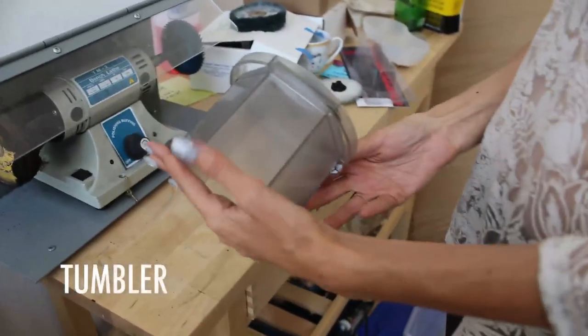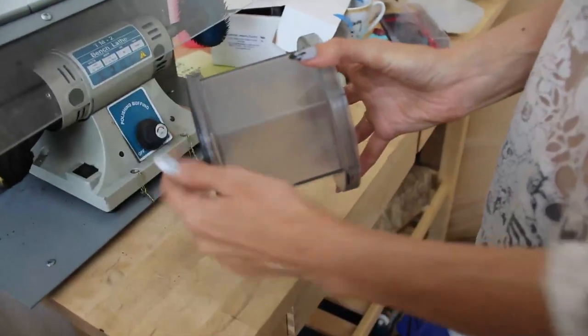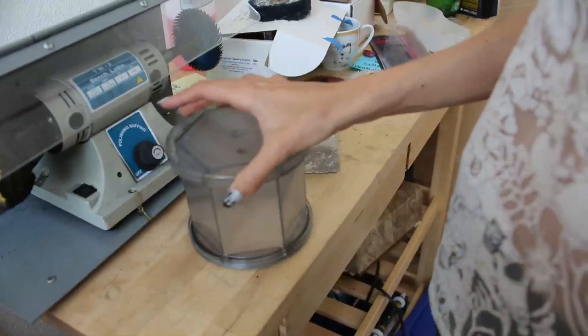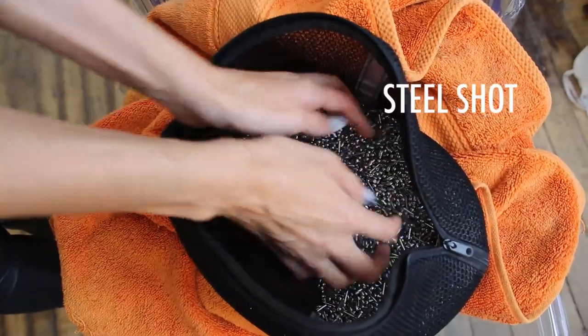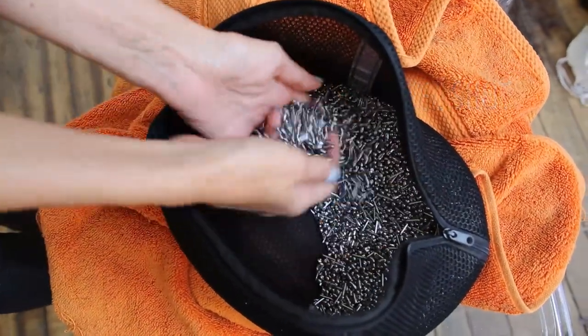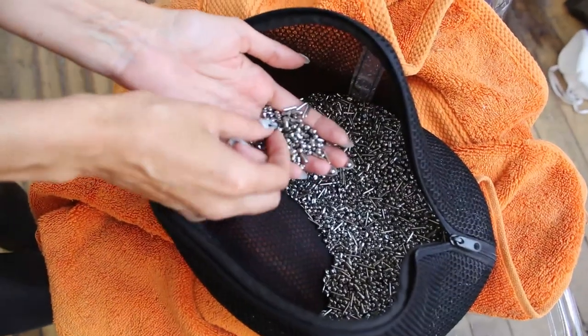This is the tumbler. Inside of here you're going to have this bag that has these tiny little things that'll get all the detail into your jewelry. They look like this. So you put your jewelry in here and all these little guys will turn and get into the jewelry detail and make it nice and detailed and shiny and beautiful.